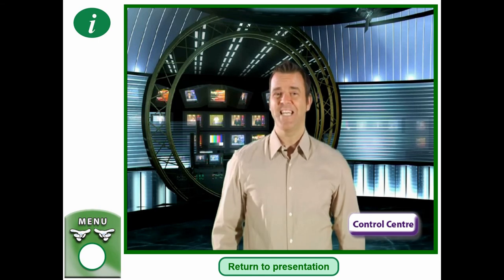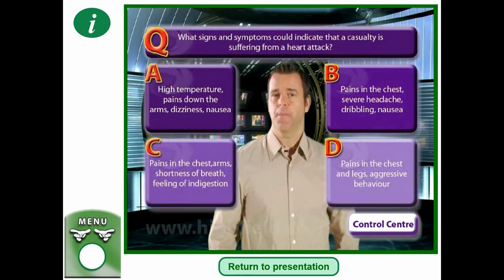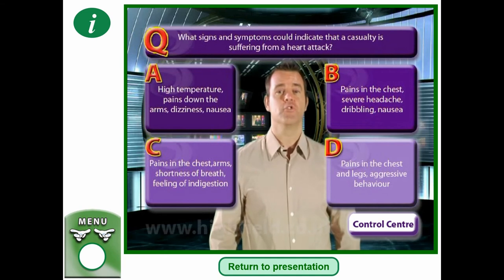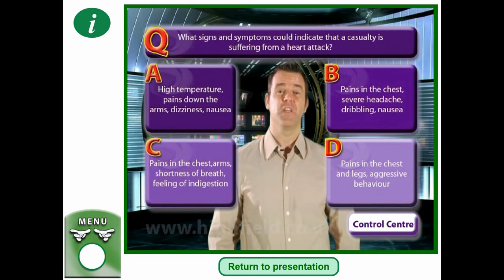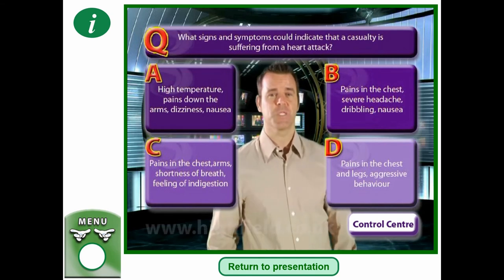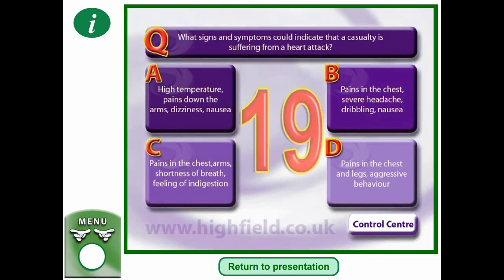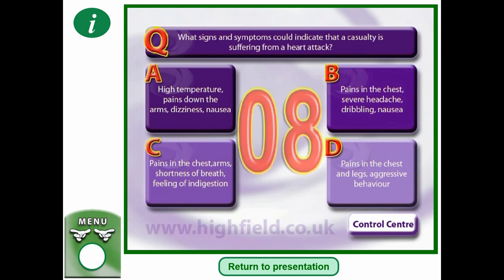Quiz question: What signs and symptoms could indicate that a casualty is suffering from a heart attack? Is it A — high temperature, pains down the arms, dizziness, nausea; B — pains in the chest, severe headache, dribbling, nausea; C — pains in the chest and arms, shortness of breath, feeling of indigestion; or D — pains in the chest and legs, aggressive behaviour? Pause the video and decide.